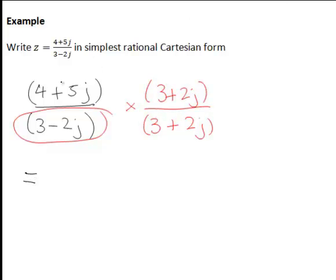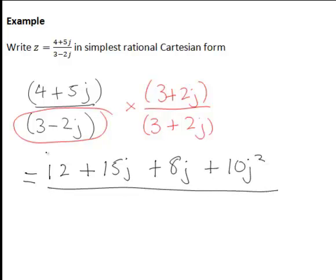So when we work this out, 4 plus 5j times 3 plus 2j: 4 times 3 is 12, then we've got plus 5j times 3 is 15j, 4 times 2j is plus 8j, and 5j times 2j is 10j squared. And on the denominator,